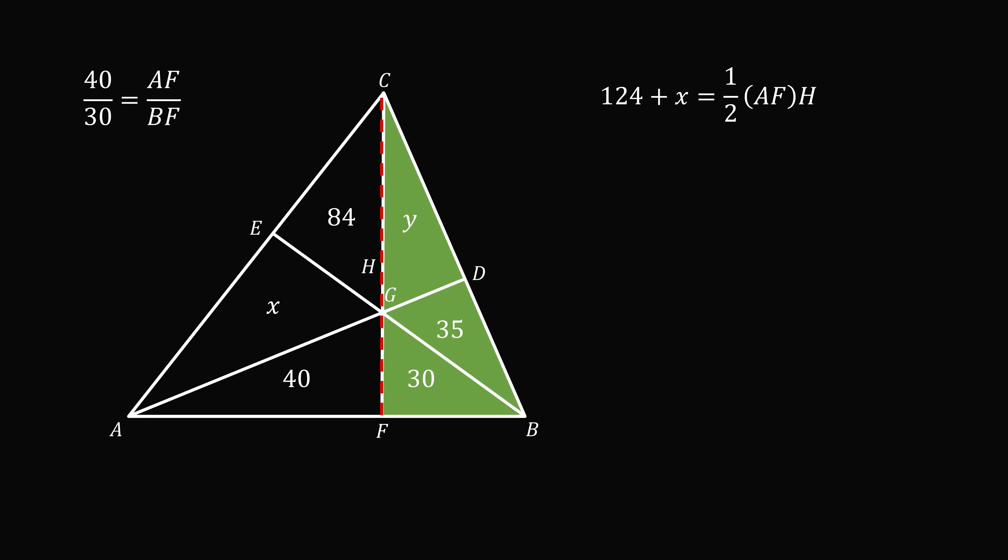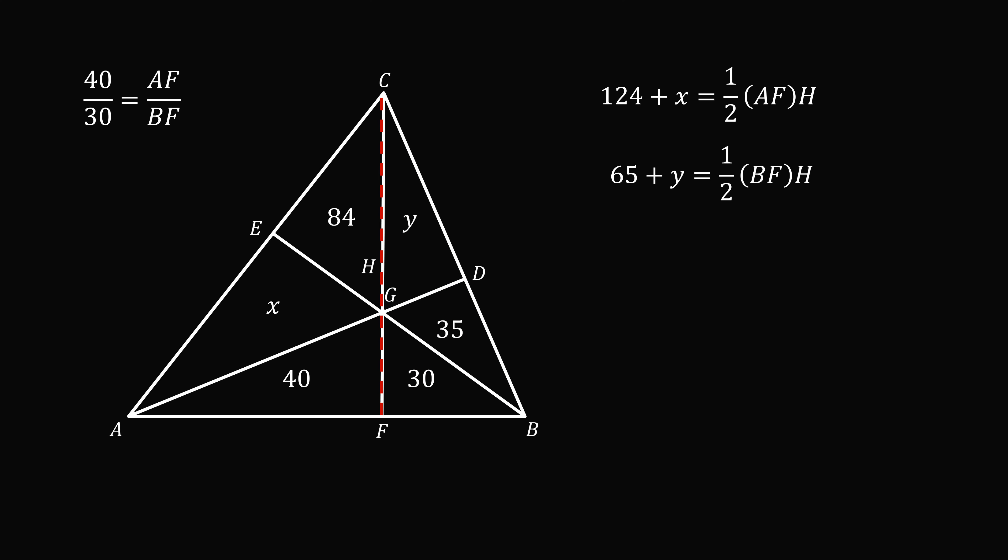Now let's do the same thing for triangle BCF. We have a different base BF, but we have the same height capital H. So the area of this triangle is the sum of the areas of these three triangles. So we have 30 plus 35 plus y, and that works out to be 65 plus y. This is equal to one half times the base BF times the height capital H. Once again, we'll take the ratio of these two equations. So we have 124 plus x divided by 65 plus y equals one half times AF times capital H, all over one half times BF times capital H. So we have 124 plus x divided by 65 plus y equals AF over BF.